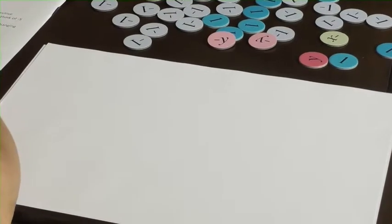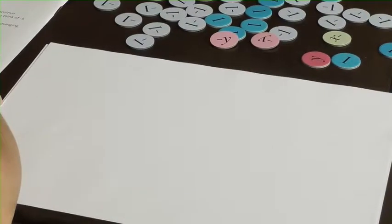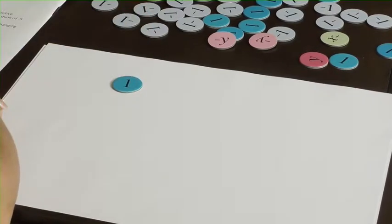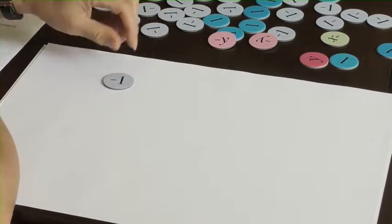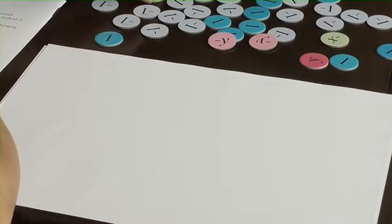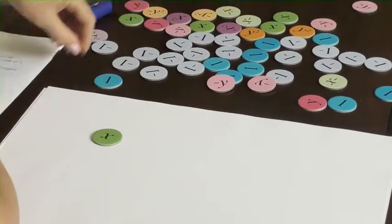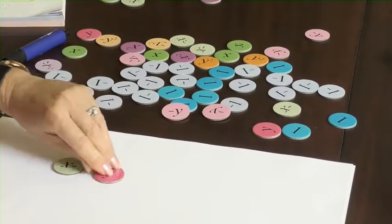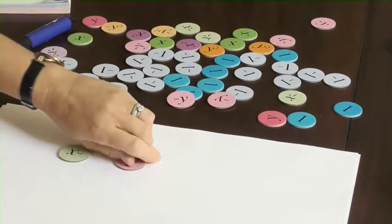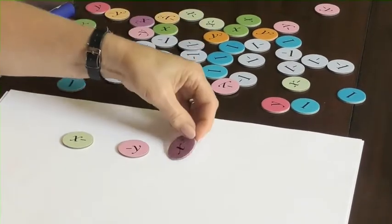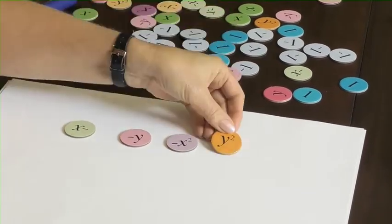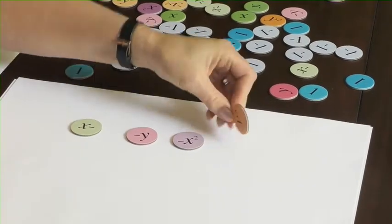Included in the set of algebra disks are, as well as the disks that represent 1 and negative 1, we've also got x's and negative x's, y's and negative y's, x squareds and negative x squareds and y squareds, and of course negative y squareds.